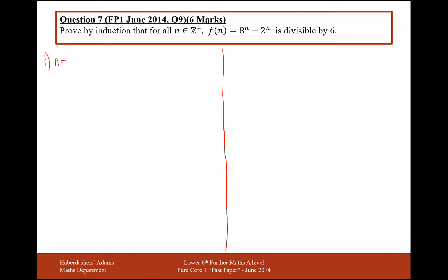That's proving the theorem true for n equals 1. So, f of 1, which is the same as 8 to the 1 minus 2 to the 1, 8 take away 2 is 6. And that is the most obvious answer for being divisible by 6.